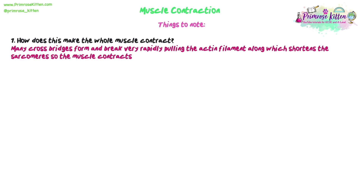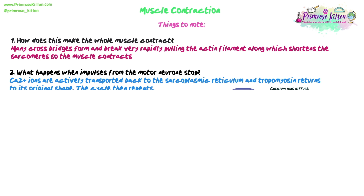The muscle will then relax and restart the cycle as long as there is an action potential arriving at the neuron. When impulses from the motor neurons stop arriving, calcium ions are actively transported back into the sarcoplasmic reticulum and stored in vesicles. The tropomyosin returns to its original shape when calcium is no longer bound to it. The cycle will repeat when a new action potential comes down the motor neuron — only when there is an action potential will calcium be released, and only with calcium can muscle contraction occur.